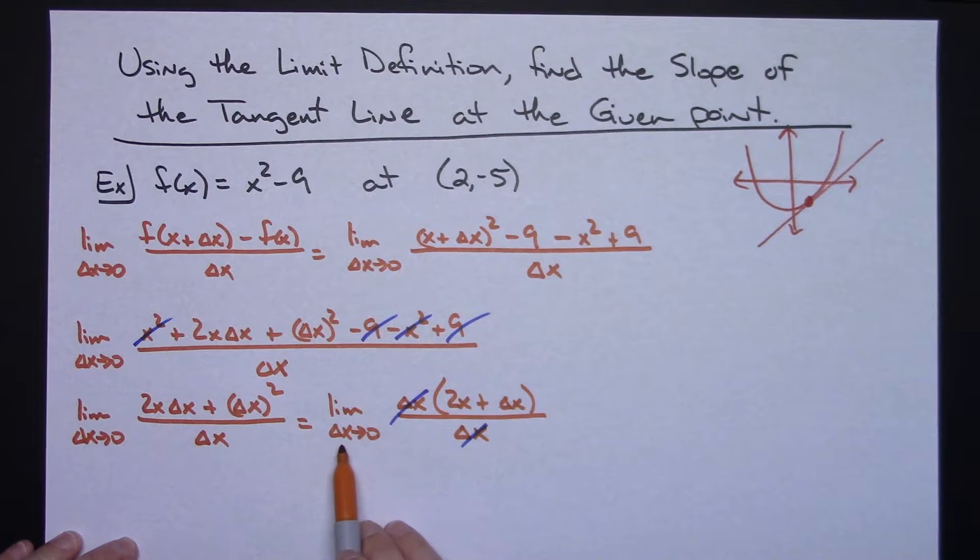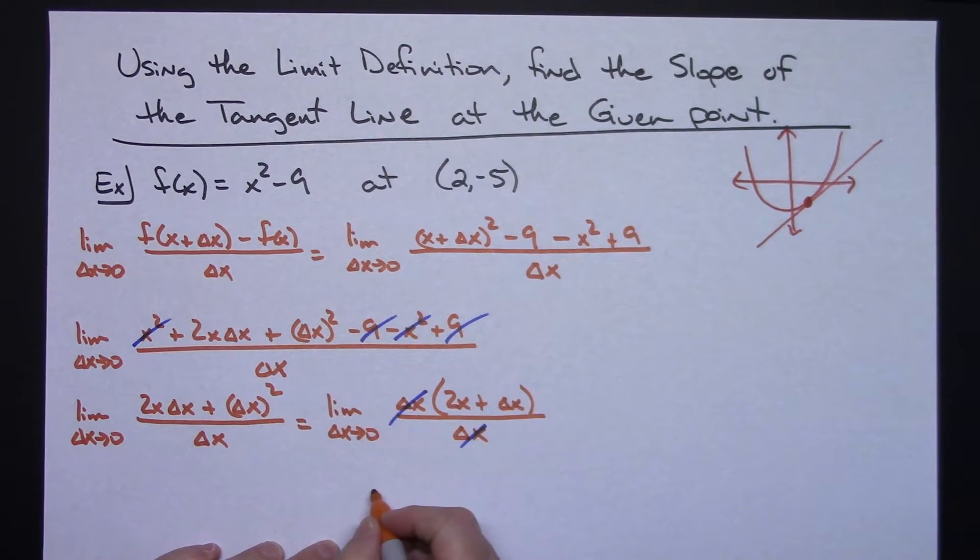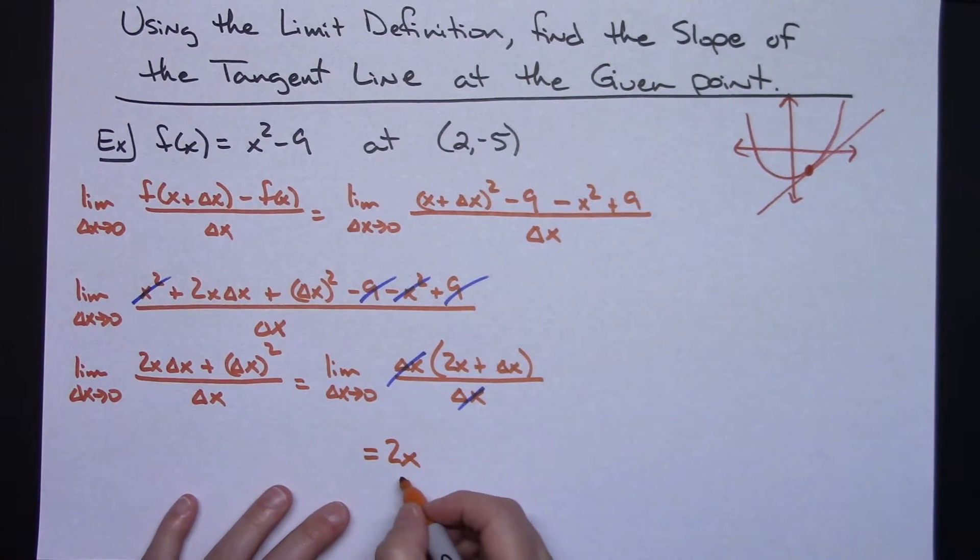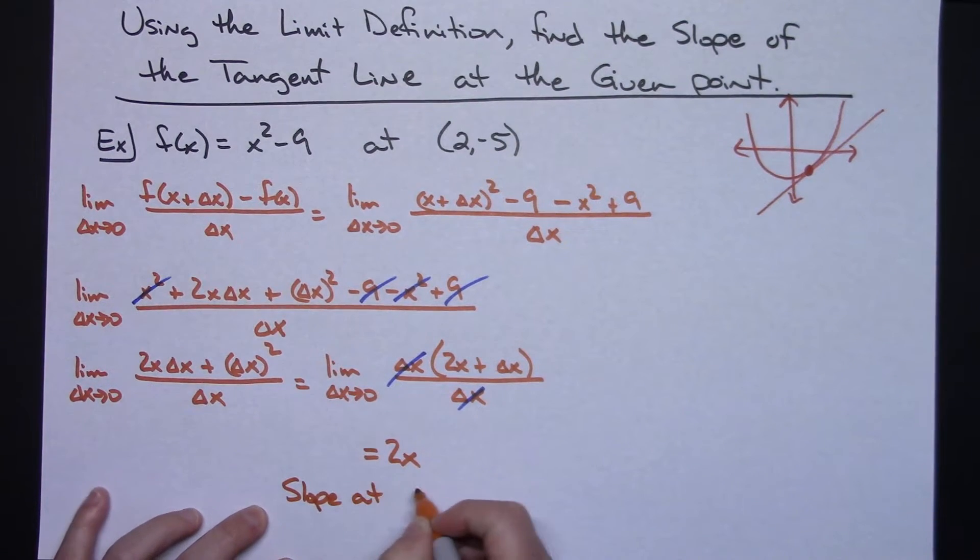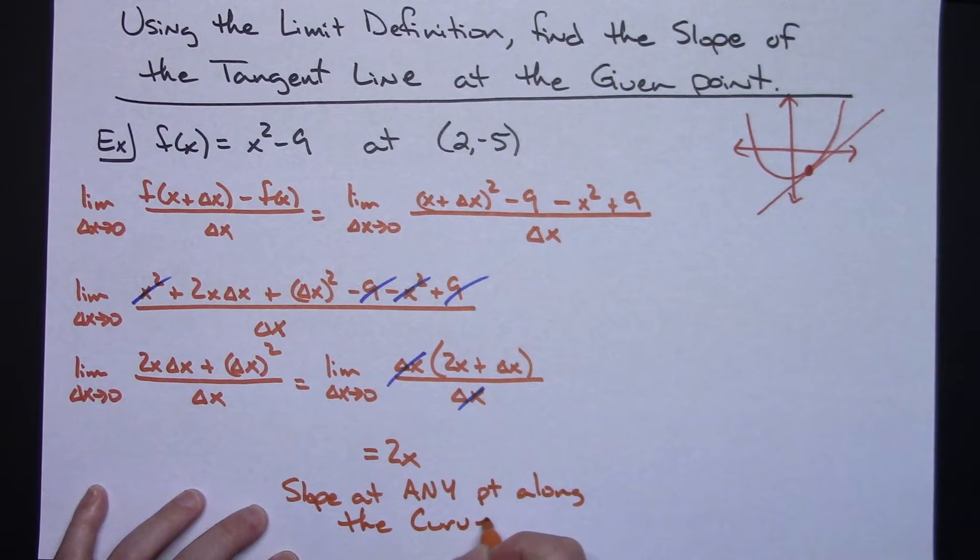Now I can actually take the limit of this expression. If I take the limit now as Delta X approaches 0, this term goes to 0, so then I would have 2x. You really need to get a grasp on what that 2x is.